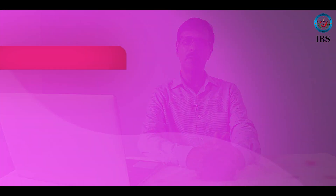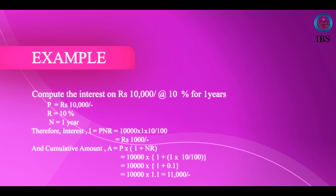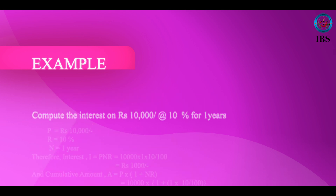Let me put an example. Suppose there is an amount of 10,000 invested at a rate of 10% for one year. The interest payable on that amount is 1,000 rupees. At the end of the first year, the depositor gets 1,000 rupees as interest. For the second year also he will get the same interest. Suppose he puts it for 5 years — first, second, third, fourth year — every year the interest remains at 1,000 rupees.